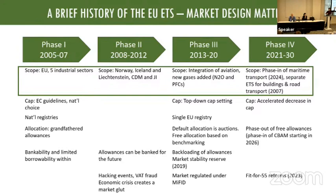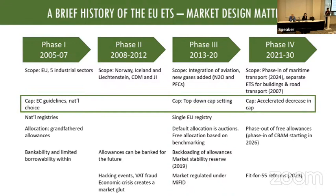How did they set the cap? There is a political economy lesson here. Initially they let every country decide on the cap for the firms in their country. If you think about the game being played, Germany doesn't want too strict a cap — so that led to overall over-allocation. In the meantime, now the cap is set at the European level, it's top-down and more systematic. They've also increased the climate ambition of Europe, and as a result the cap is actually going down much faster.